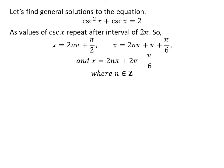Let us find the general solutions. Since the values of cosec(x) repeat after an interval of 2π, the general solutions are: 2nπ + π/2, 2nπ + π + π/6, and 2nπ + 2π minus π/6, where n is an integer.